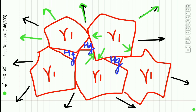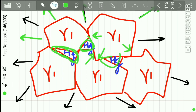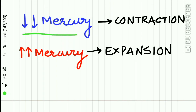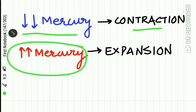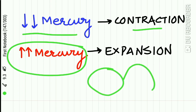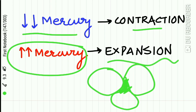If sufficient mercury is present to provide a plastic matrix, expansion will occur when gamma 1 crystals impinge. These gamma 1 crystals consume the mercury present in between them, resulting in continued reaction. If insufficient mercury is present, there is contraction of the final product. If the interstitial spaces between the gamma 1 crystals contain sufficient mercury, it results in expansion of the final product.